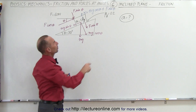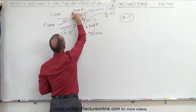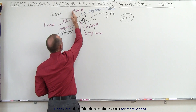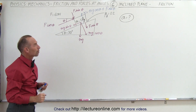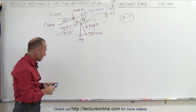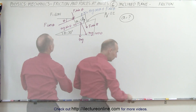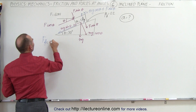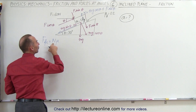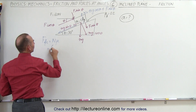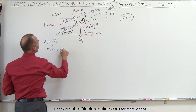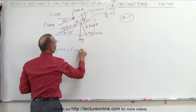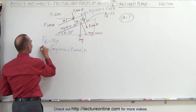Now some people will say, shouldn't this be cosine as well? The answer is no — this is the opposite side to this angle, so for this force, f sine theta will be the perpendicular component to the incline. Since there's a coefficient of friction, we're going to have a friction force equal to the normal force times mu. The normal force is the sum of mg cosine theta plus f sine theta, so the friction force equals (mg cosine theta + f sine theta) times mu.